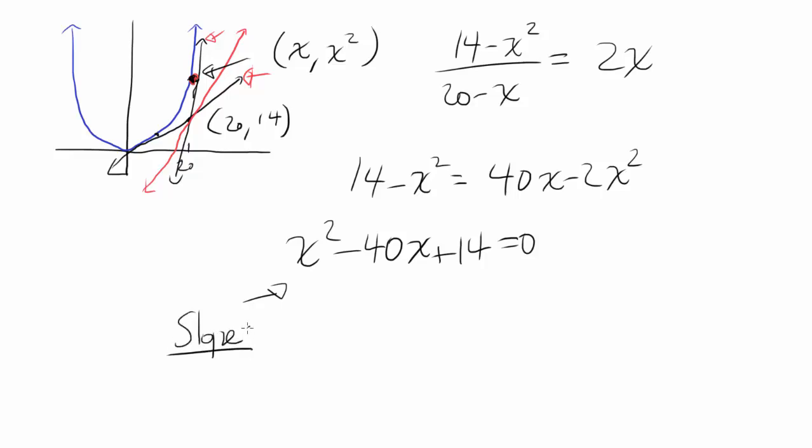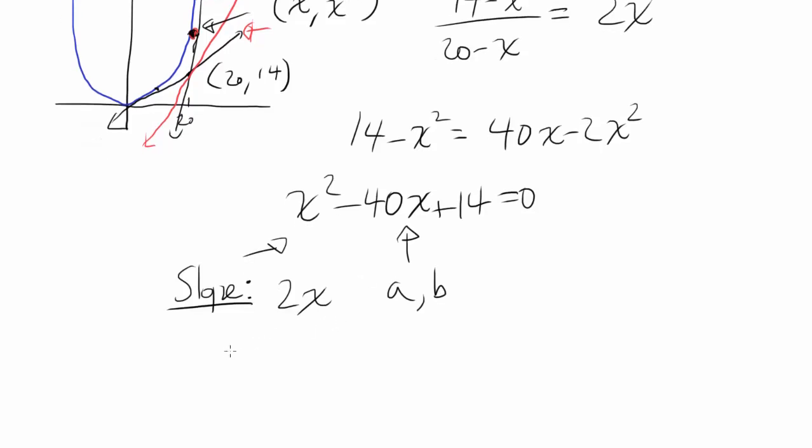We want to find the slope. For X squared, you know the slope is going to be 2X. So let's say the solutions to this equation are A and B. Then we want to find 2A plus 2B. This is going to be our solution, or 2 times (A plus B). So all we need is to find the sum of the roots of this equation. And that's going to be 40.